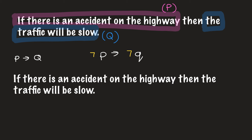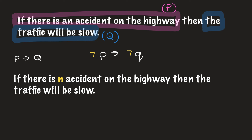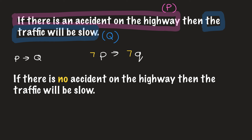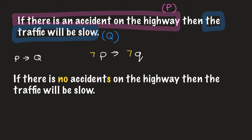We're going to rewrite it in inverse form. Not P means: there are no accidents on the highway. Then we need the negation of 'the traffic will be slow': the traffic will not be slow. So we have negated both P and Q. The inverse statement is: if there are no accidents on the highway, then the traffic will not be slow.